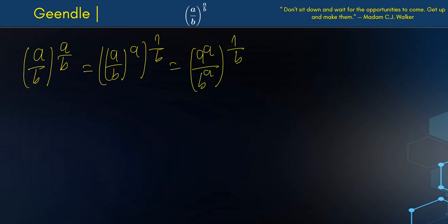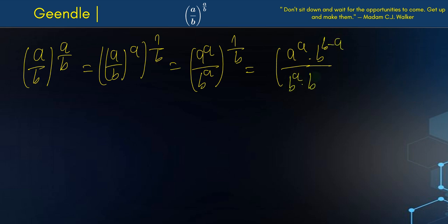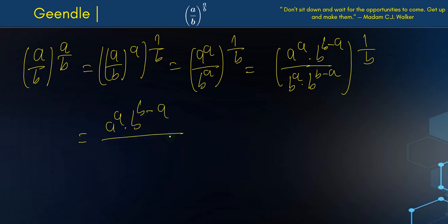This is all to the power of 1 over b. To get rid of the a as a power of b, I'm going to multiply both numerator and denominator by b to the b minus a. So this is the same thing, all to the power of 1 over b. We're going to have a to the a times b to the b minus a, all over b — same base, different power — so a plus b minus a, all to the power of 1 over b.